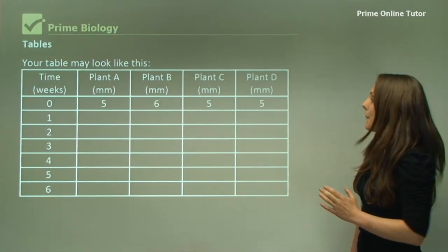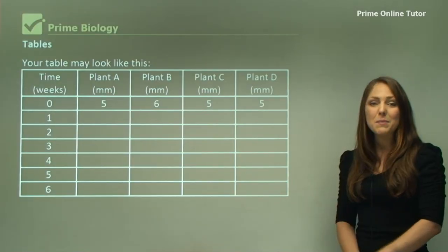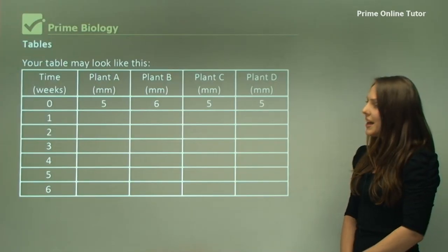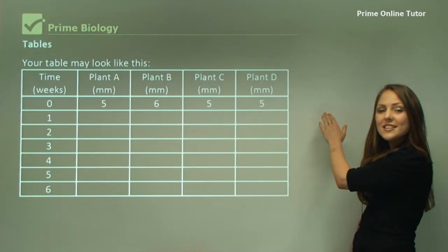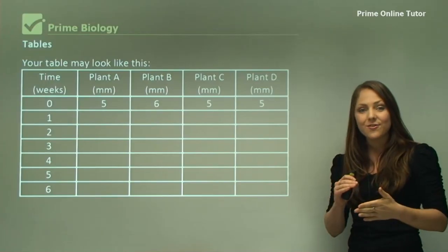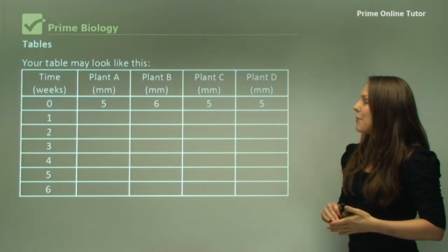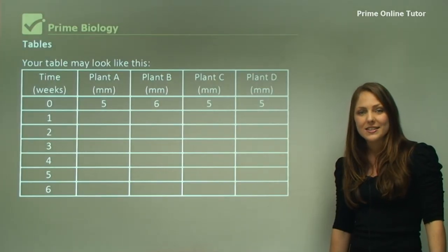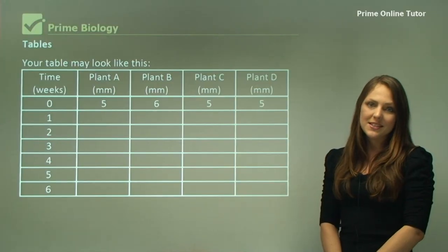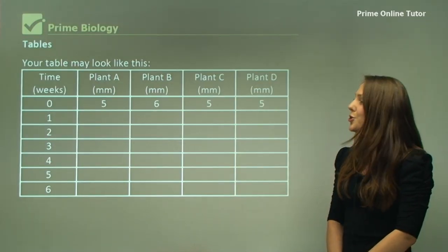Your table may look like this: Plant A and Plant B may be the same species, and Plant C and Plant D may be species two. At zero weeks, which is the first initial measurement, they're all around about the same size. This is very important to keep controlled in your experiment. You're not going to start with one plant that's a baby seedling and another that's quite mature.